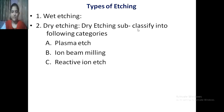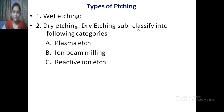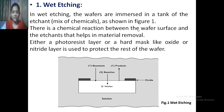There are two types of etching: wet etching and dry etching. Dry etching is further subclassified into the following categories: plasma etching, ion beam milling, and reactive ion etch. Let us see the first type, which is wet etching.